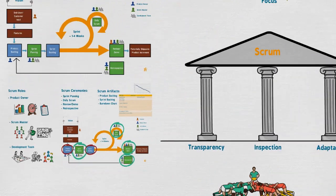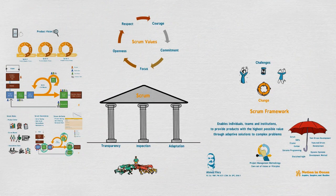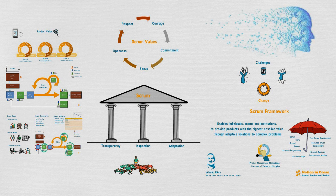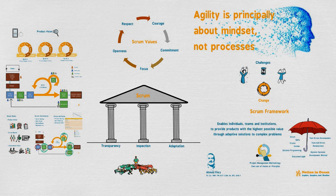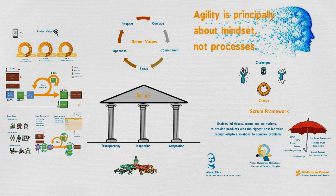Today we discussed Scrum — its pillars, values, framework, and team. That is a good start for your Scrum master journey and certification. Remember, agility is principally about mindset, not processes. Thank you for your time. See you soon with another topic, inshaAllah.